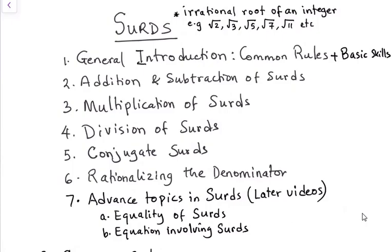In this video, we will be talking about surds. To begin with, what are surds? They are irrational roots of an integer. For example, numbers that we cannot simplify the root further, such as root 2, root 3, root 5, root 7, and root 11. And that is just to begin with.